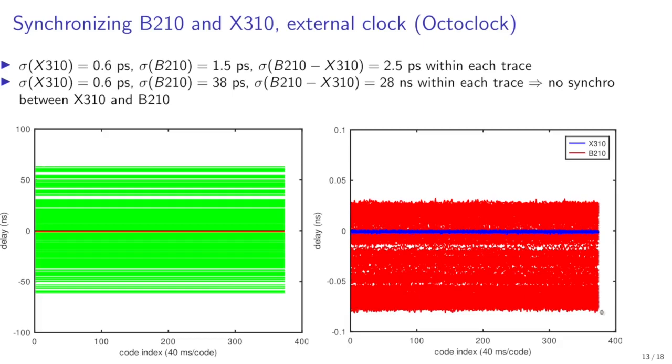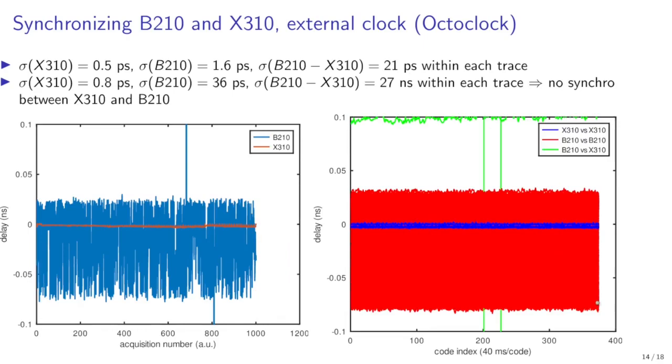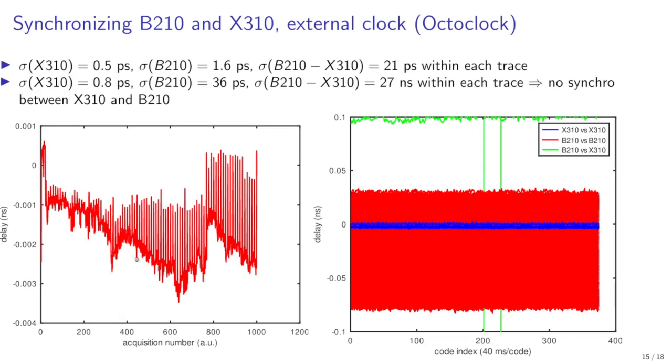If now we look at the mean value as a function of time here are the 1000 measurements and you show the time delay mean value within each curve. You see that well it fluctuates randomly. However if we zoom into the X310 alone we will see some sort of structure appearing. So the B210 fluctuation appears to be completely random in this 30 picosecond standard deviation but the X310 seems to have a pattern.